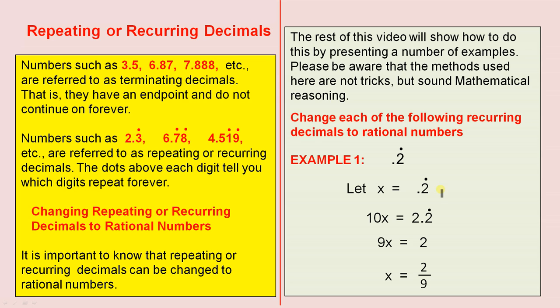10x minus x gives you 9x. 2.2 recurring minus 0.2 recurring is 2. That gives us 9x equals 2. So x equals 2 over 9. So, 0.2 recurring is 2 over 9.